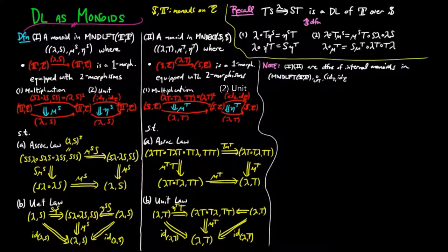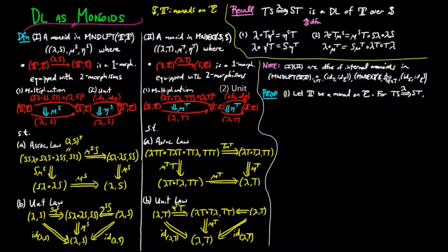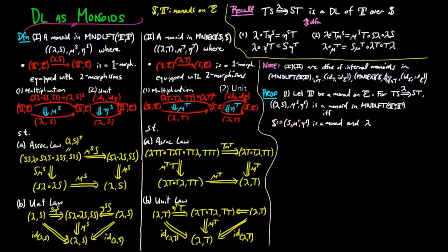Here, the monoidal categorical structures have composition as the tensor product and the identities as the unit objects. Now we are able to show the main result. One: let T be a monad on E and S an endofunctor on E. Then, for a natural transformation lambda from TS to ST, (lambda S, mu S, eta S) is a monoid in the endomorphism category of T in monad lifts, if and only if S is a monad on E and lambda is the distributive law of T over S.